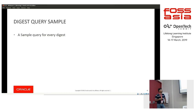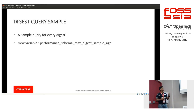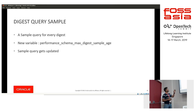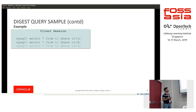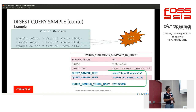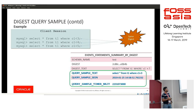Another community request was digest query samples. The statement digest summary table has consolidated summaries of all statements, and the community wanted one sample query stored in the system. We added that, along with a new variable performance_schema_max_digest_sample_age — the query will be re-sampled once this time expires. For example, with three similar statements having the same digest, the events_statements_summary_by_digest table now shows three new columns: query_sample_text (e.g., SELECT * FROM t1 WHERE id < 3), when the query was first seen, and how long that particular sample query took.